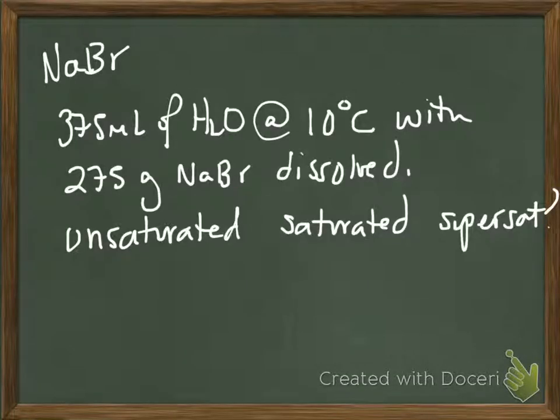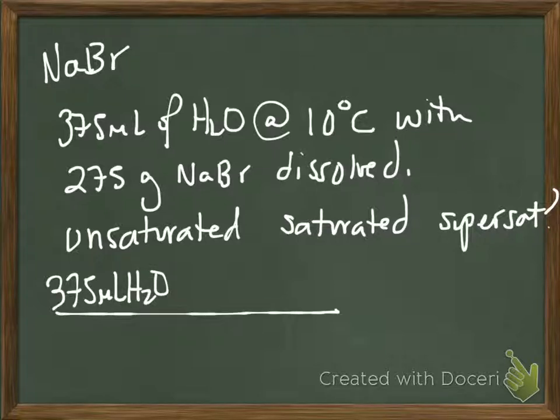Let's move on to something a little bit trickier. We have a solution comprised of 375 milliliters of water at 10 degrees Celsius with 275 grams of sodium bromide dissolved in it. Is it unsaturated, saturated, or supersaturated? What do you have to do here? The easiest way to handle this is a factor label. You're comfortable doing factor labels. They're nice because they lay out all the steps and all the units for you. What are we going to start with? We're going to start with water.